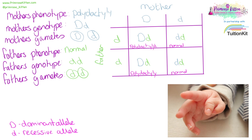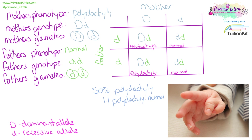We can see that when the dominant allele is present, the children are going to have polydactyly, and when there are two recessive alleles present, the children are going to have a normal phenotype of having five fingers. We can say there is a 50% chance of a child being born with polydactyly, or that the children will be born in a one-to-one ratio of normal to polydactyly.